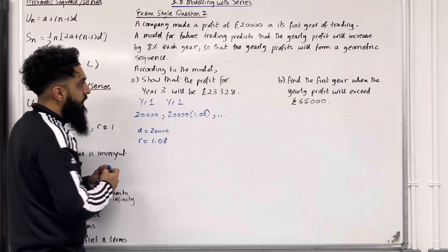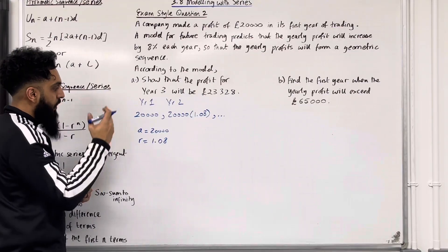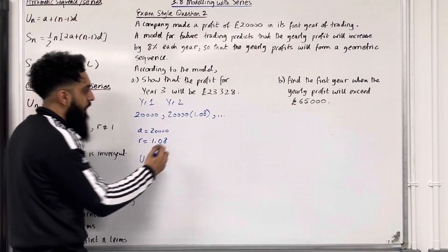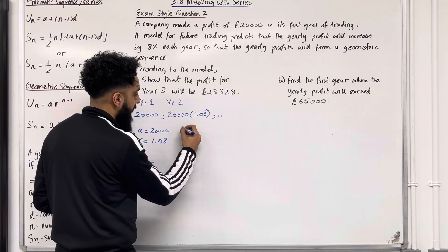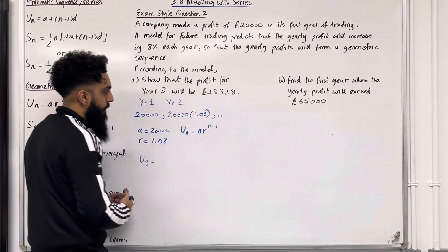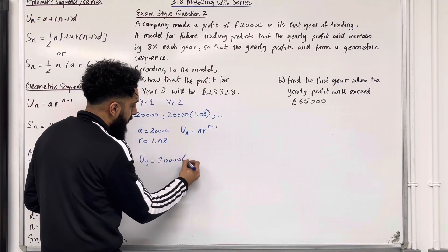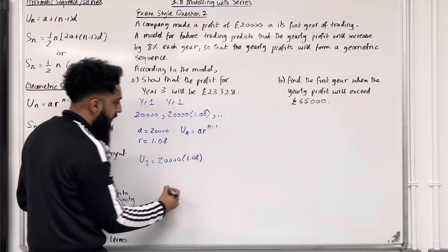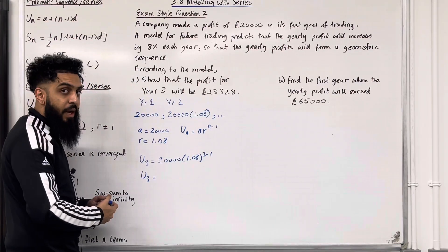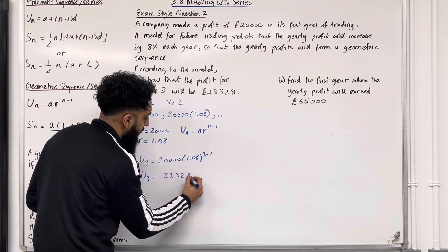Part A: show that the profit for year 3 will be £23,328. We're trying to calculate U₃. We apply the nth term formula for a geometric sequence: Uₙ = ARⁿ⁻¹. So U₃ = 20,000 × 1.08^(3−1). Putting this into the calculator gives precisely £23,328.